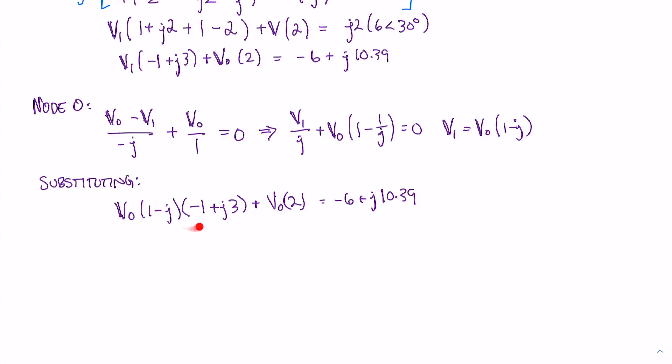Now we multiply these two rectangular coordinates together using the FOIL method - firsts, insides, outsides, lasts. We get minus 1 plus J plus J times 3 plus 3, and then we have our 2, so plus 2, and that equals minus 6 plus J10.39. Simplifying this term and dividing to the other side to isolate Vout, we find that Vout equals 0.549 plus J2.05.